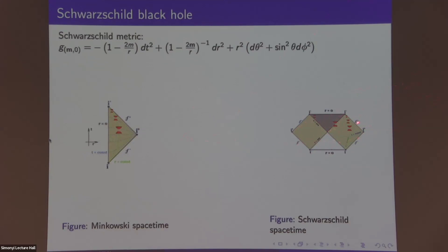When r is large enough, this is a light cone, which is an important object when studying the Lorentzian metric. When r is very large, the light cone looks like that in Minkowski spacetime.